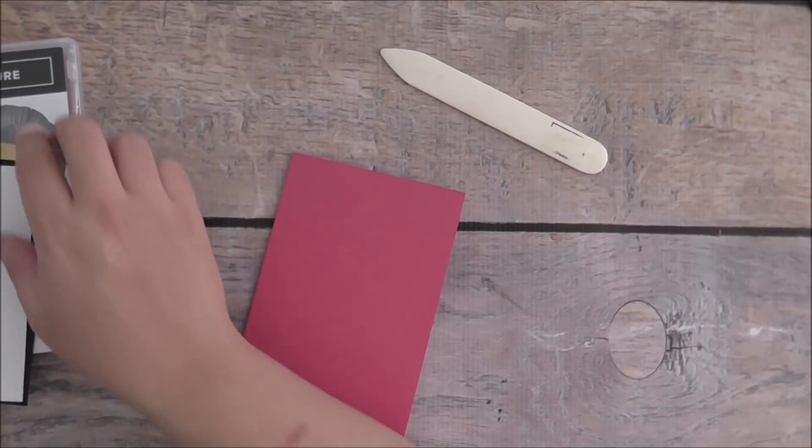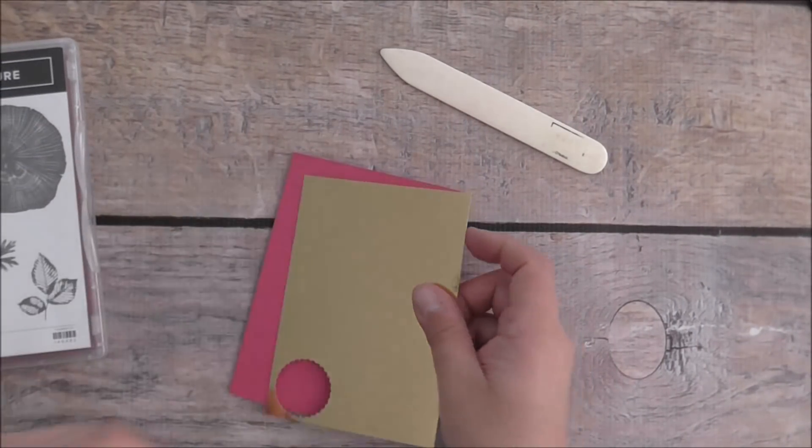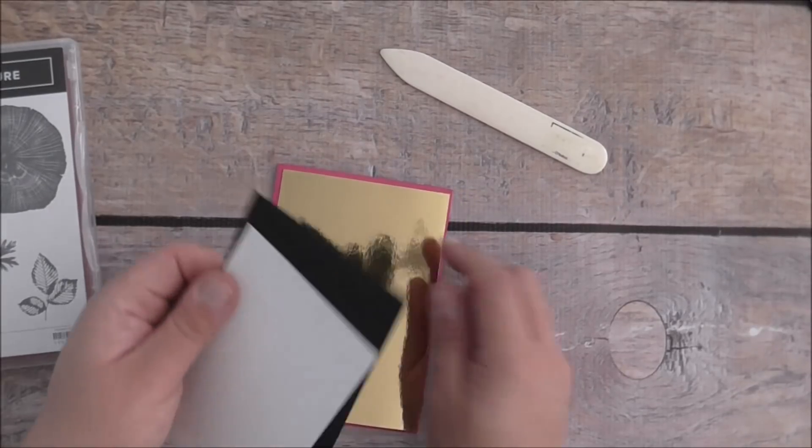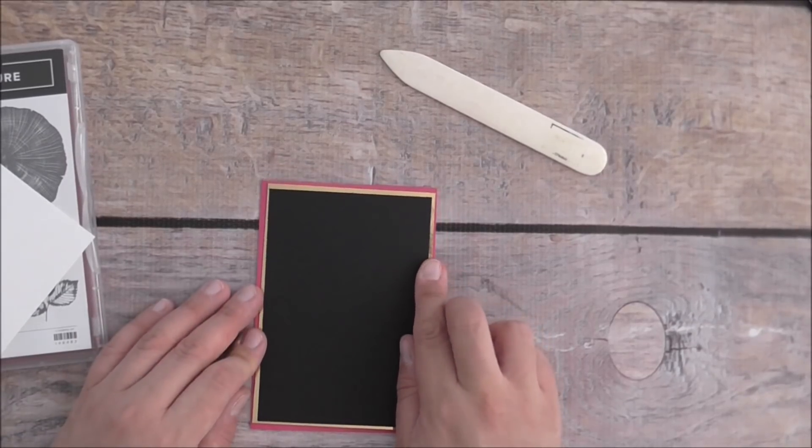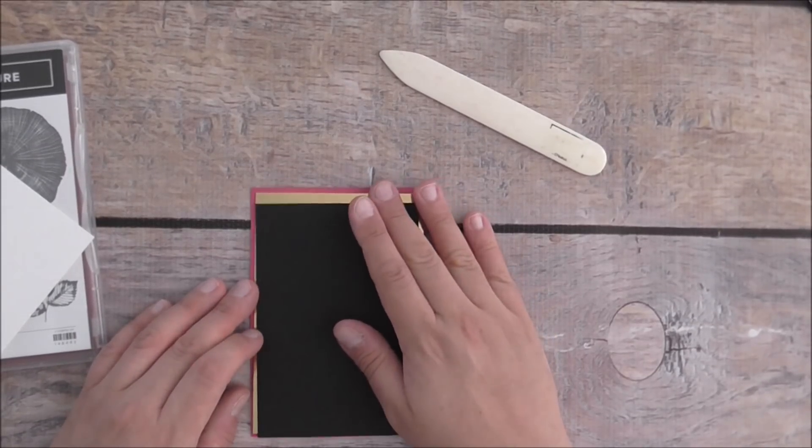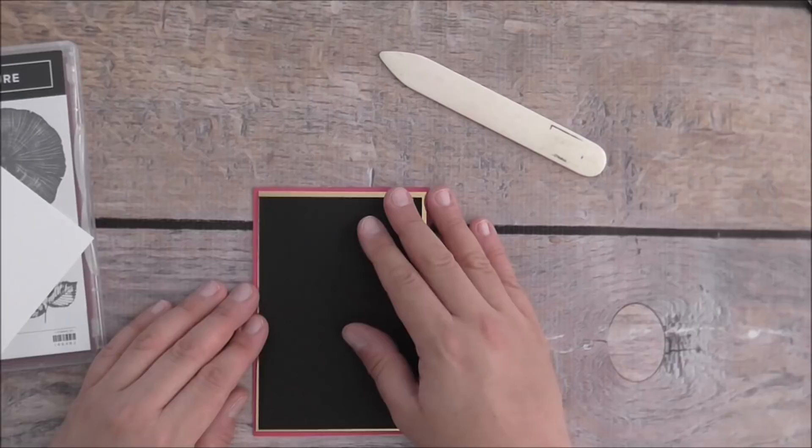On top of that we're going to have a piece of gold foil and basic black. I'm not going to give dimensions because you can adapt this to whatever card base you want.